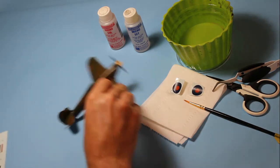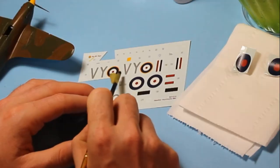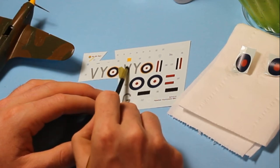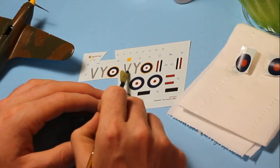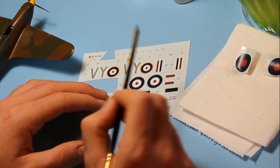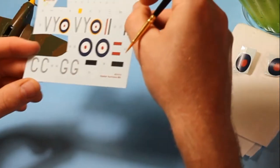Where it could be a problem with the carrier film is around the lettering. As here for instance, this is all one section, so this has got clear carrier film in between. It might be worth cutting out the different letters and then around the roundel, and then making sure you get the placement aligned correctly.